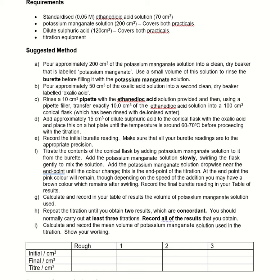First off, as we can see, it's a case of rinsing the pipette with the ethane dioic acid. We're going to put 10 cubic centimetres into a 100 cubic centimetre conical flask, add a bit of sulphuric acid, and just making it up.